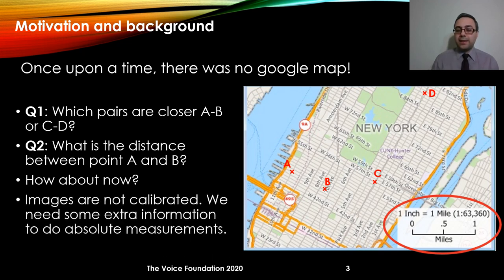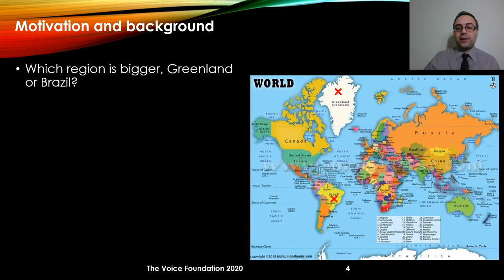Based on this small experiment, we say that images are not calibrated — meaning you cannot say what the actual size of an object in the image is. However, often we could compare the size of different objects within the same image. Now let's do a different experiment. Here we are provided with a map of the world and we are asked to say if Greenland or Brazil is larger.